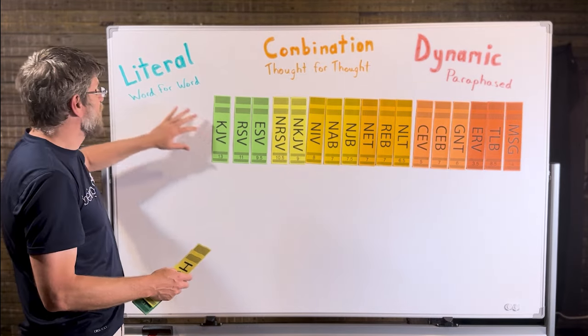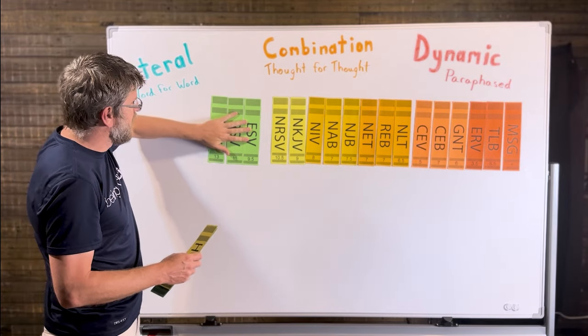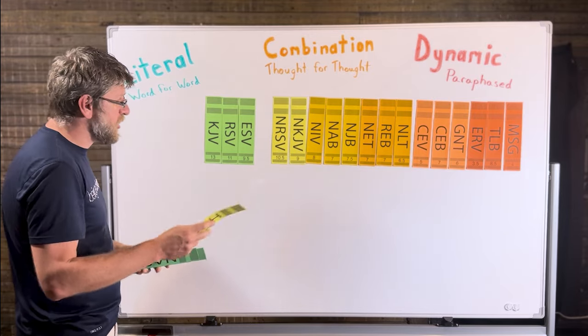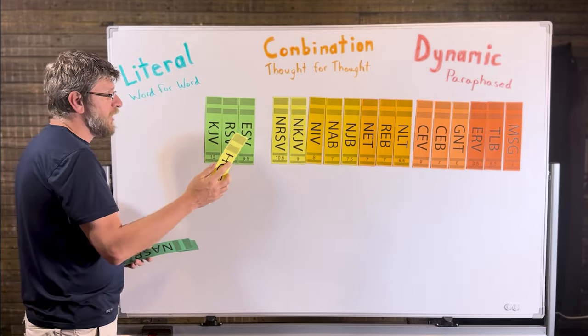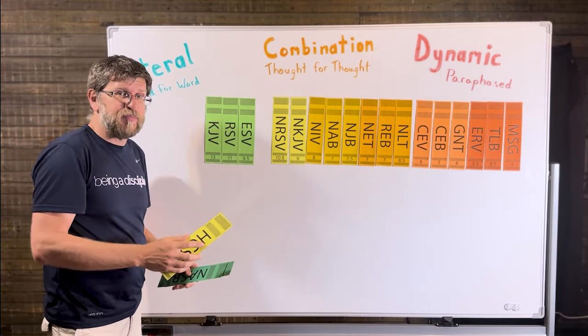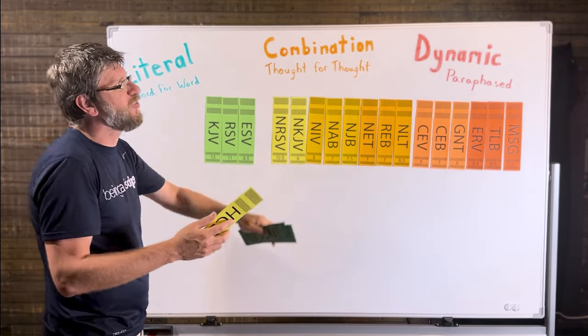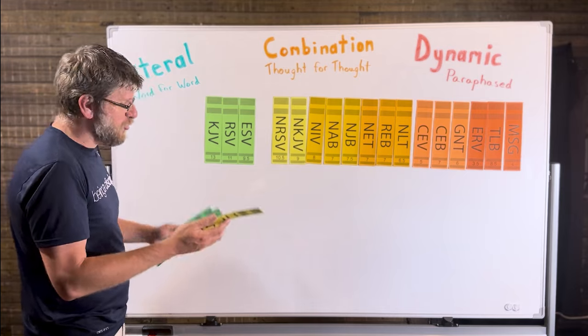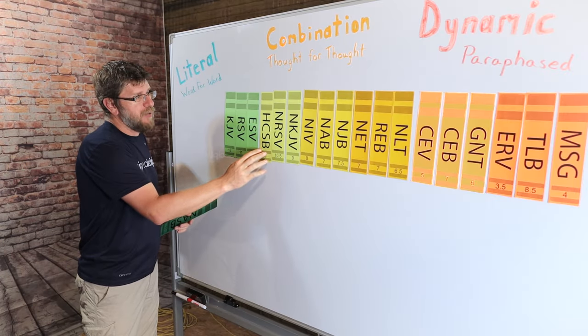And now we're moving more into this word-for-word side of it. And one that I wanted to mention here is the Holman Christian Study Bible in the early 2000s. They were trying to create a modern English translation out of the ancient manuscripts, but they wanted to try not to be a literal equivalency or dynamic equivalency. They call it, we want to have the optimal equivalency.